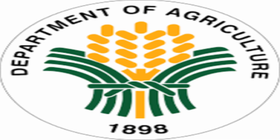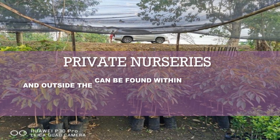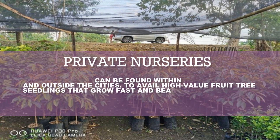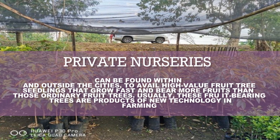Department of Agriculture: it is created to promote agricultural development and growth, making it responsible for propagating high-value fruit bearing trees. This department gives free fruit bearing tree seedlings, leaflets, and booklets to guide fruit tree growers. It can be found within and outside the cities to avail high-value fruit tree seedlings that grow fast and bear more fruits than ordinary fruit trees. These fruit bearing trees are usually products of new technology in farming.